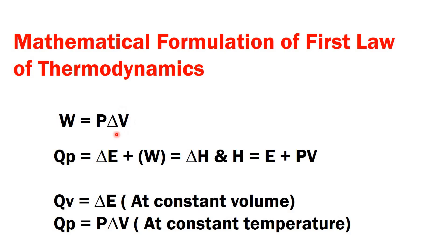In case of expansion, volume increases. In case of contraction, volume decreases. In case of expansion, the sign of this work W is negative. In case of contraction, it is positive, because there energy is added to the system or transferred from the surrounding to the system. In case of expansion, energy is transferred from the system to the surrounding, so it is taken as negative.